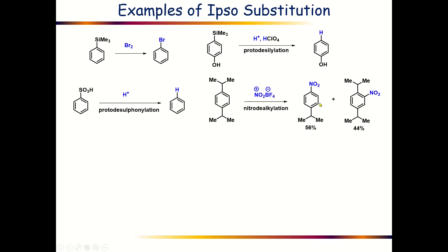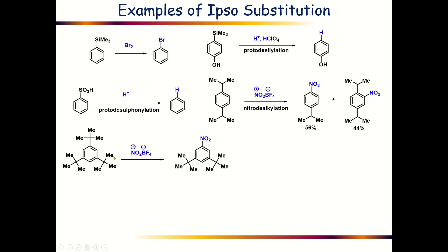Interestingly, this particular reaction follows two competitive pathways: one is the ipso substitution reaction and another is the ortho electrophilic aromatic substitution reaction, and both products are formed in almost equal amounts. Another very interesting nitro-dealkylation reaction is when a benzene molecule is attached with three tert-butyl groups and treated with NO2+ BF4− salt — again nitro-dealkylation takes place and one tert-butyl group will be replaced by NO2.